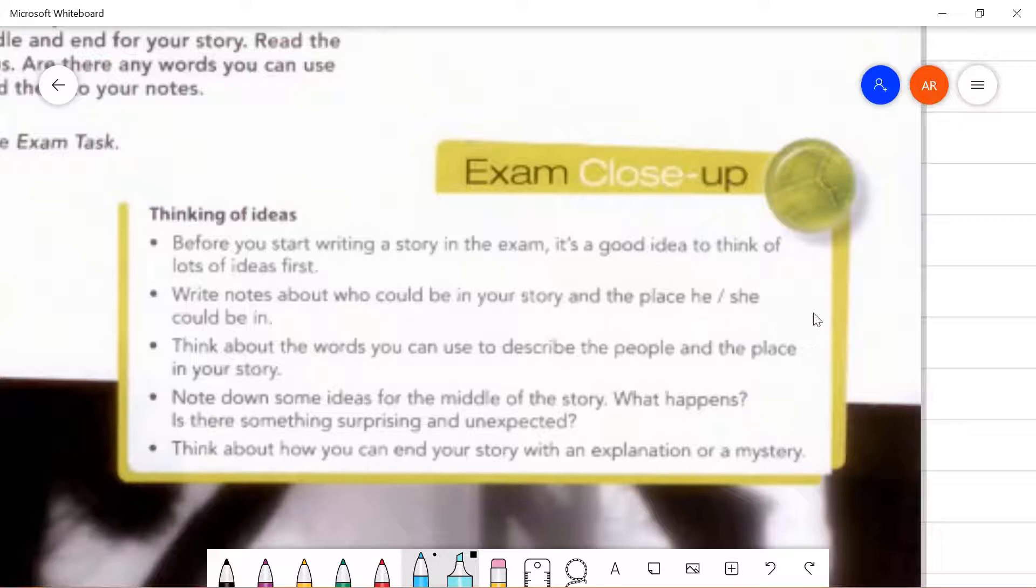write notes about who could be in your story and the place he or she could be in. So you need to come up with your character in your story. Is it a boy or a girl? Male or female? And then how old is your character? What is his or her name? Who could be in your story? And then also the place. Place he or she could be in. Where is this place setting?